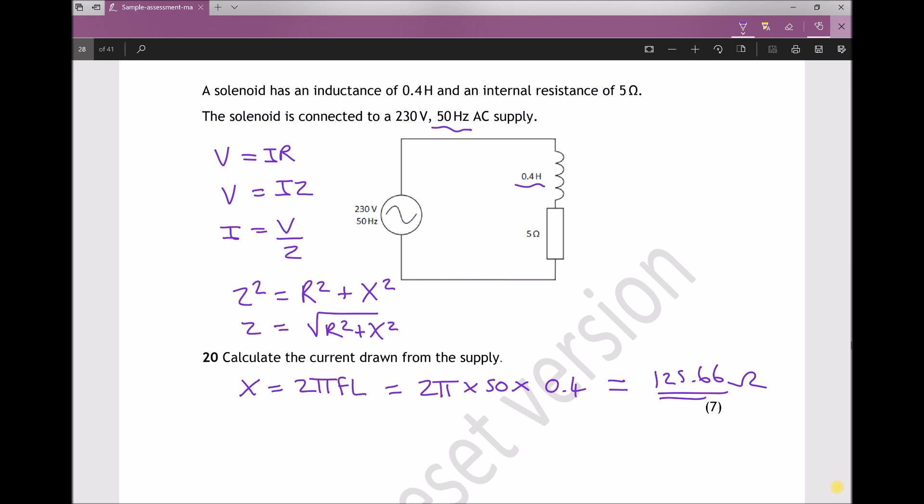And the units are still ohms, although it's slightly different from resistance of a passive component. So now let's calculate Z then. Z is the square root of R squared plus X squared. Well, R is 5, given on the diagram. That's for the series resistor. And X, as we've just calculated, is 125.66, giving us a total impedance Z of 125.76 ohms.